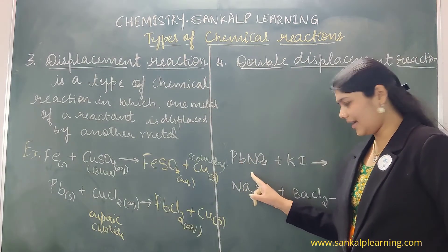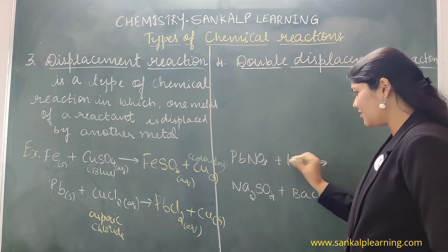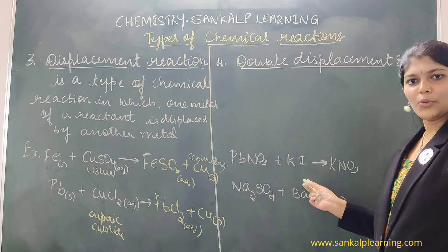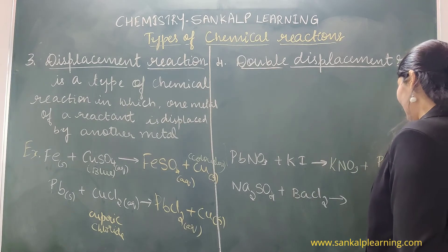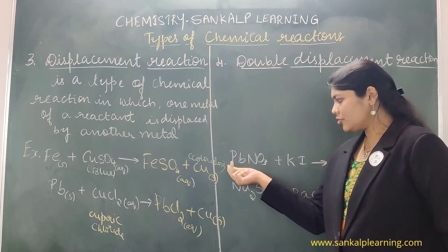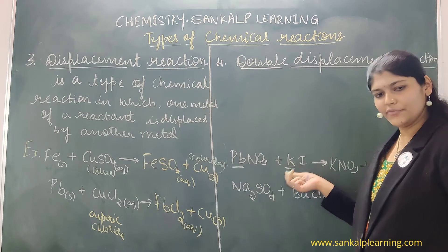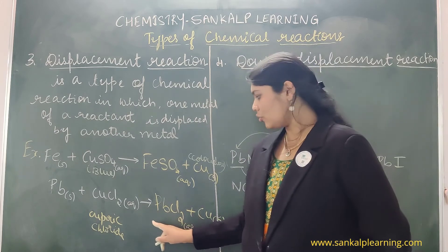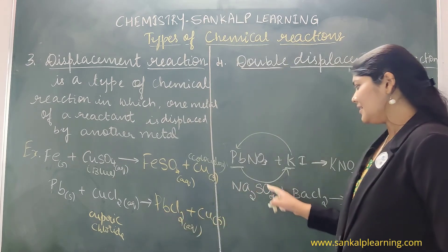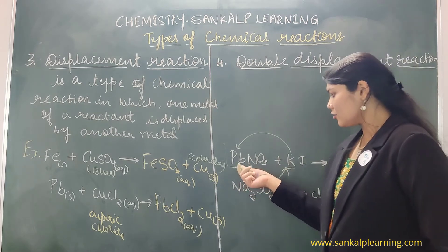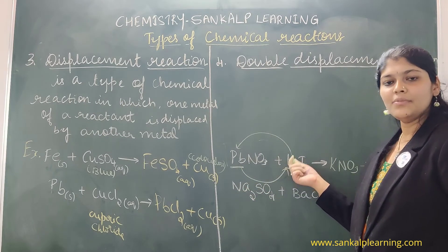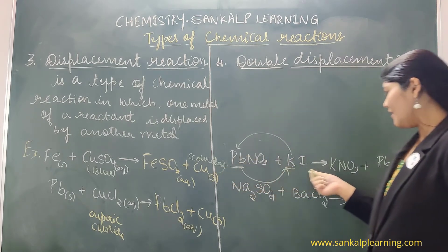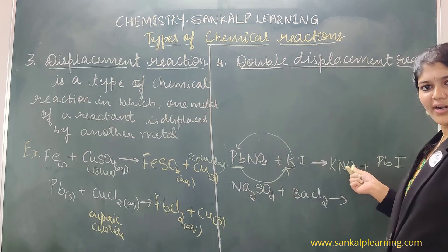Lead nitrate (Pb(NO3)2) plus potassium iodide (KI) gives potassium nitrate (KNO3) — what we call gunpowder — plus lead iodide (PbI2). In single displacement, only one metal is displaced; whereas here, two metals are exchanged. Lead comes in the place of potassium, and potassium goes in the place of lead. So the products are potassium nitrate and lead iodide. This is a balanced chemical equation.